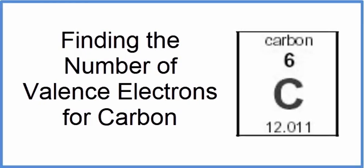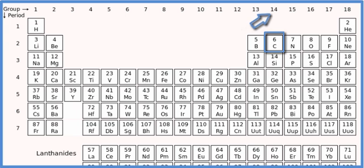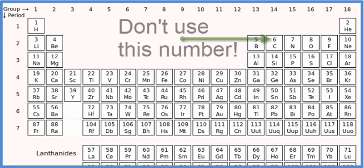There are two ways to find the number of valence electrons for carbon. The first, and probably the easiest, is to look at the periodic table. We can see that carbon is in group 14, sometimes called group 4A, and that means it has four valence electrons.